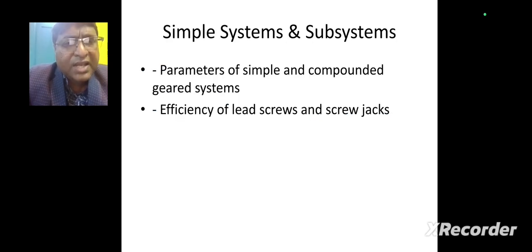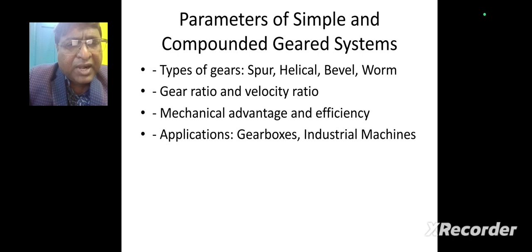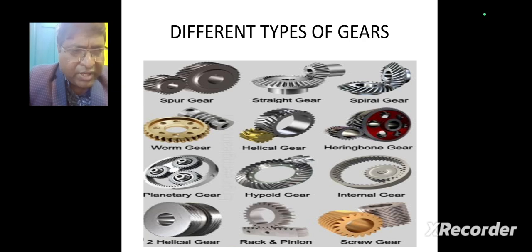Now we will discuss simple and compounded gear systems, including the efficiency of lead screws and screw jacks. Parameters of simple and compounded gears include gear ratio, velocity ratio, mechanical advantage, and efficiency. There are different types of gears: spur, helical, bevel, worm gears, etc. Here are figures of different types of gears including spur gear, straight gear, spiral gear, worm gear, helical gear, planetary gear, internal gear, rack and pinion, and screw gears.